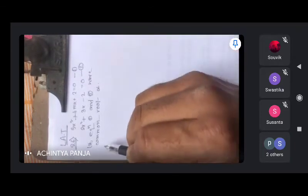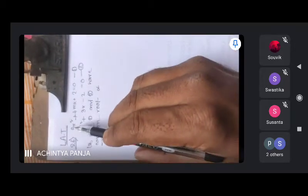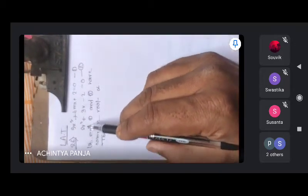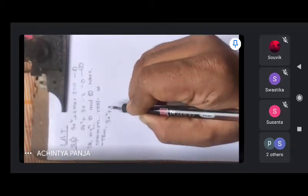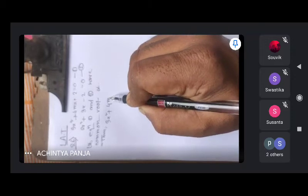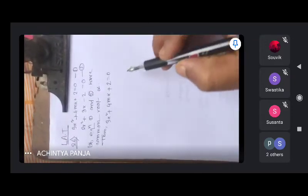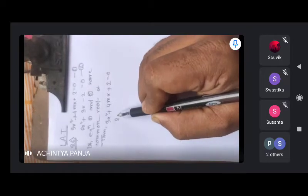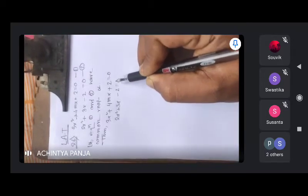Then 3 alpha square plus 4m alpha plus 2 equal to 0, and 2 alpha square plus 3 alpha minus 2 equal to 0.